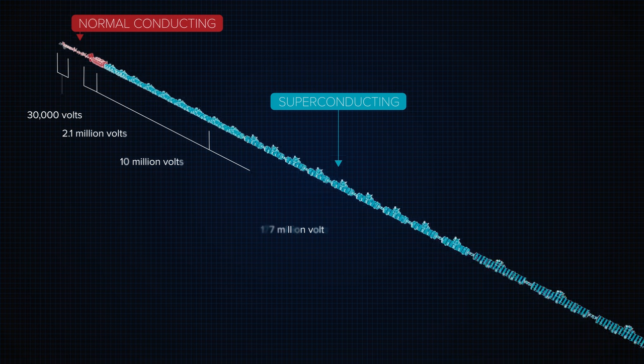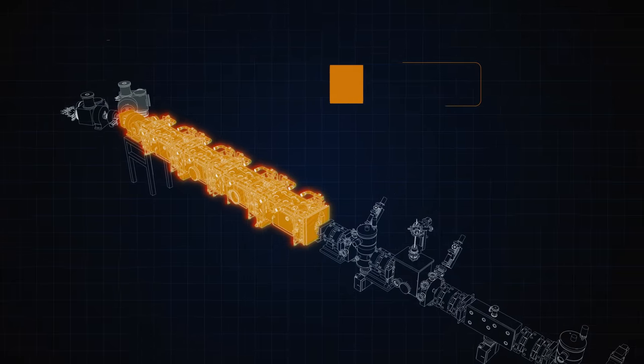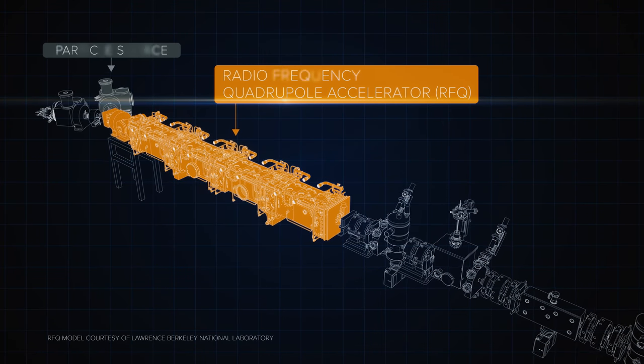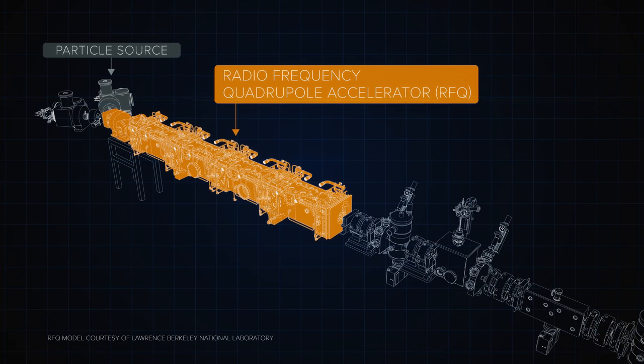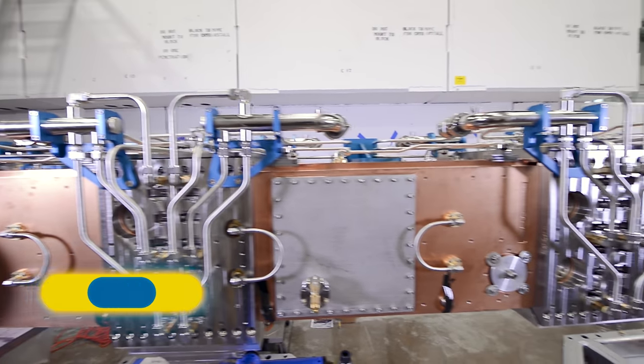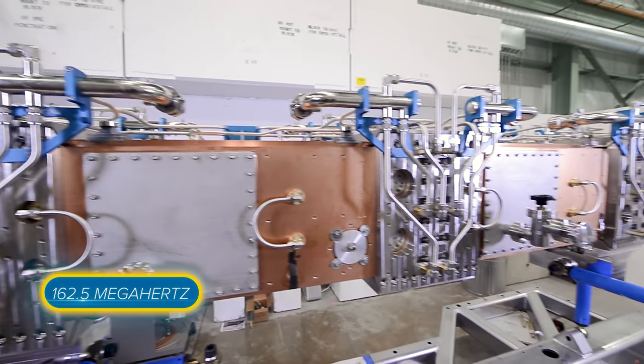The first stage with oscillating fields is this radio frequency quadrupole accelerator or RFQ, which was designed by Berkeley Lab. It operates with a radio frequency of 162.5 megahertz.